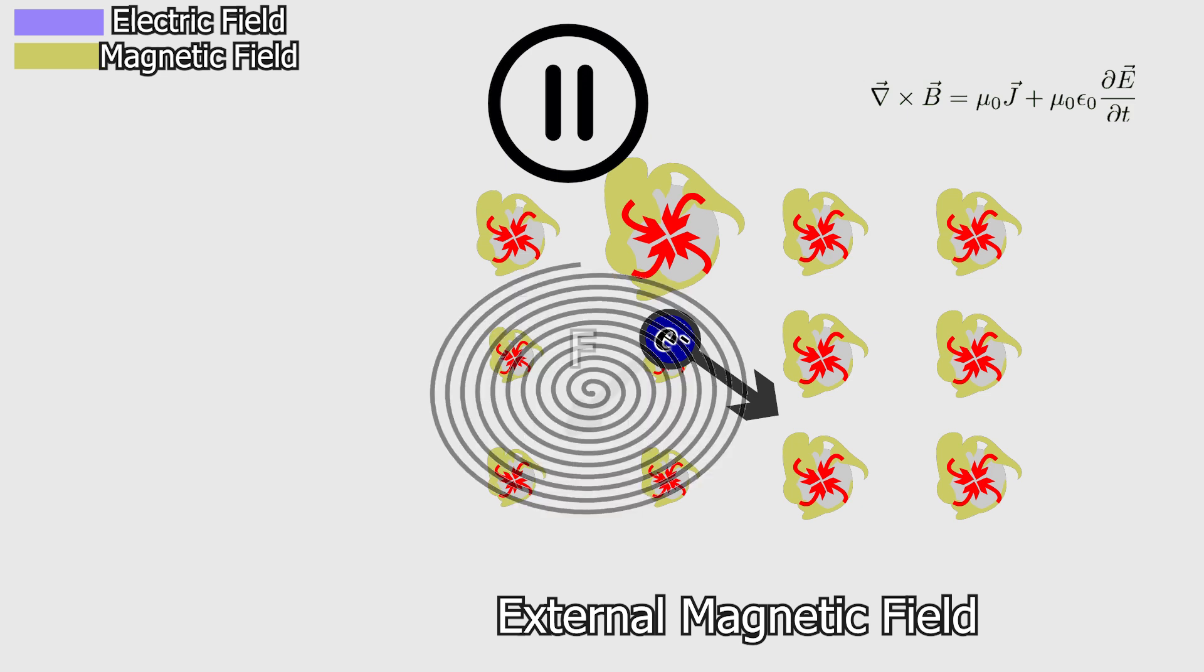Therefore, the electron feels a force directing it toward the region with a weaker total magnetic field, representing a lower energy state. This energy difference causes the electron's path to bend as it seeks a lower energy state. This motion results from the combined effects of the magnetic field generated by the electron and the external magnetic field.